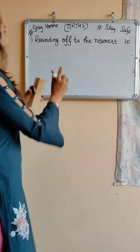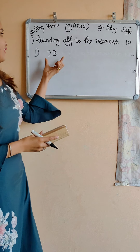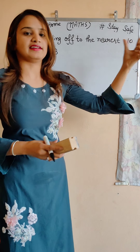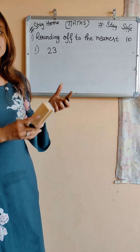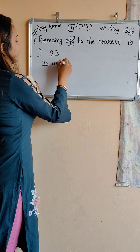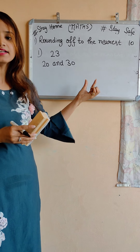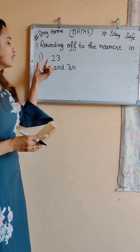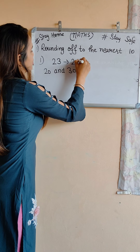Let us take one example: 23. We have to find the rounding off to the nearest 10. First we will find between which two 10s 23 lies. 23 lies between 20 and 30. But 23 is closer to 20, so our answer is 20.